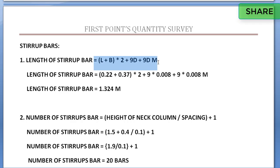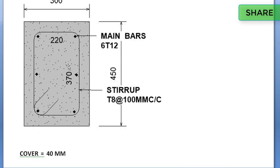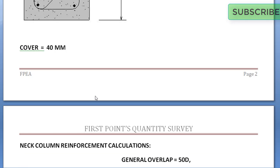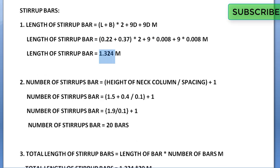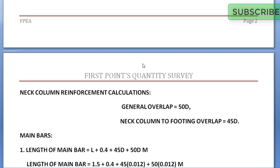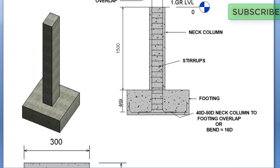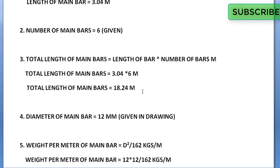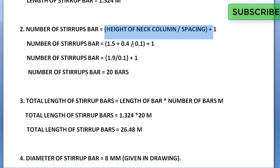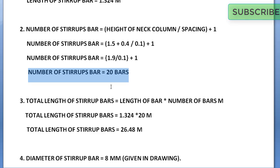For stirrup bars, the length of stirrup bar formula is (L plus B) into 2, plus 90, plus 90 — covering four sides plus two 90-degree hooks. Substituting values gives a stirrup length of 1.324 meters. Number of stirrup bars equals height of neck column divided by spacing, plus 1. Height is 1.5 plus 0.4 equals 1.9 m, spacing is 100 mm equals 0.1 m, so 1.9 divided by 0.1 plus 1 gives 20 stirrup bars.